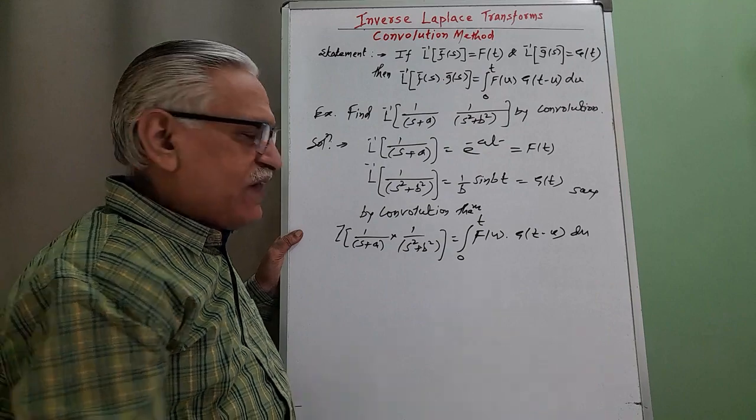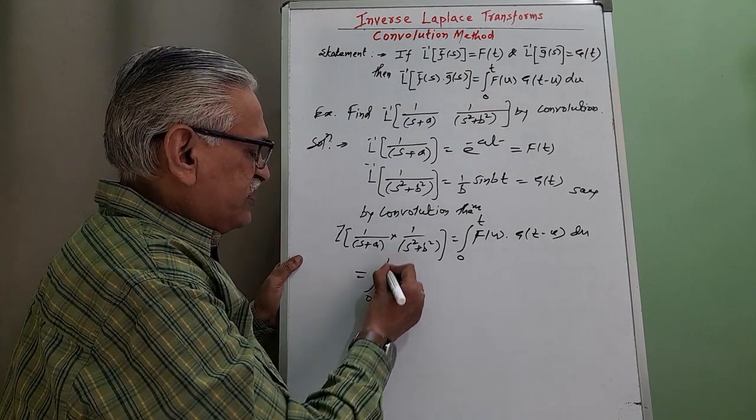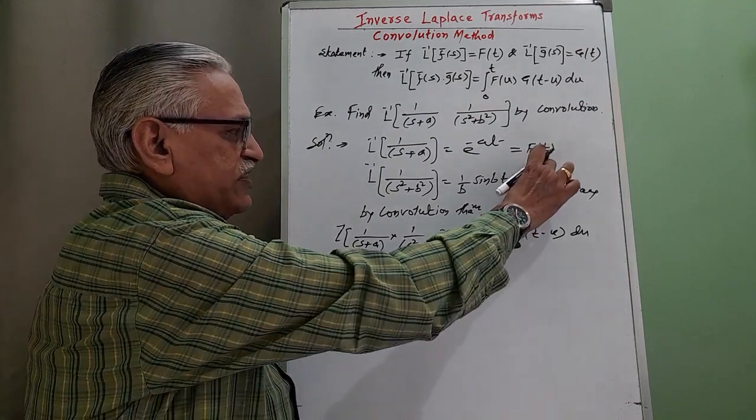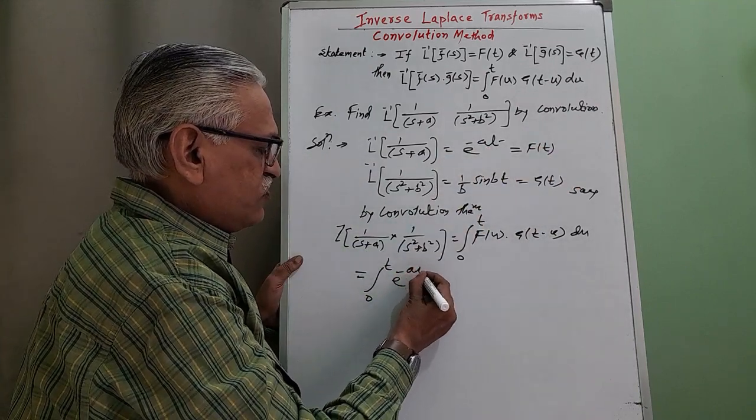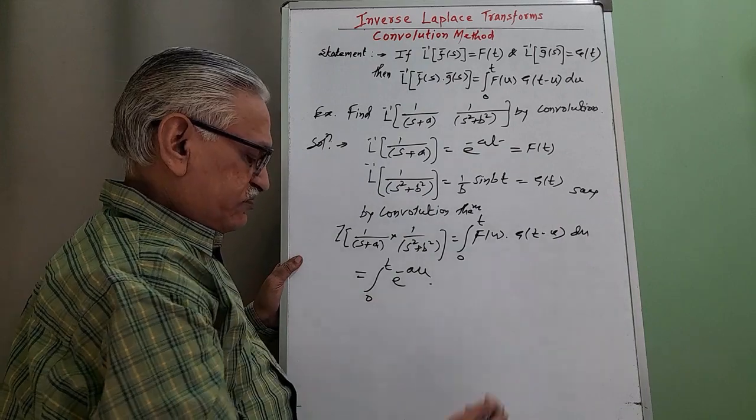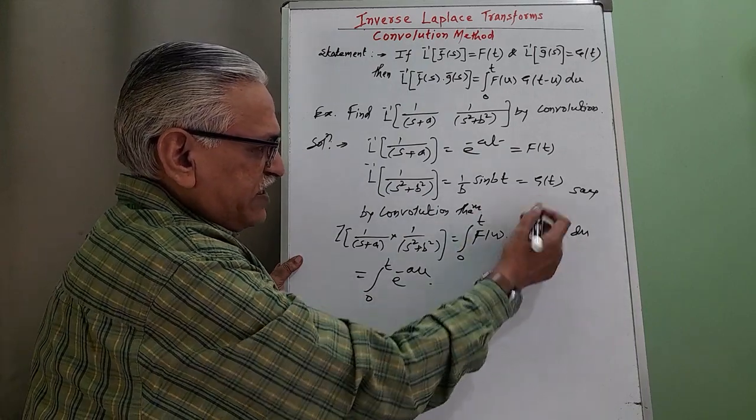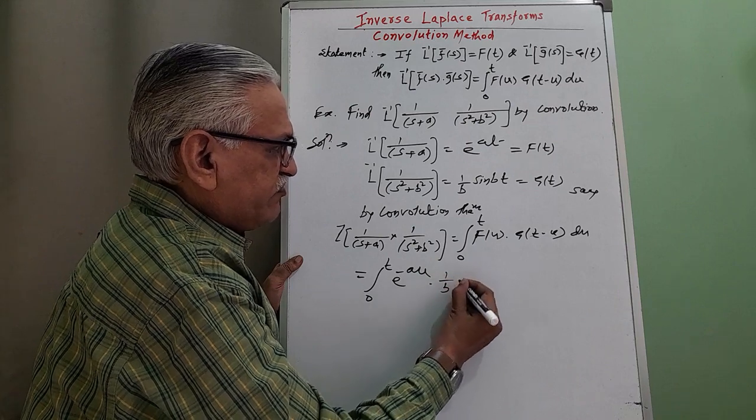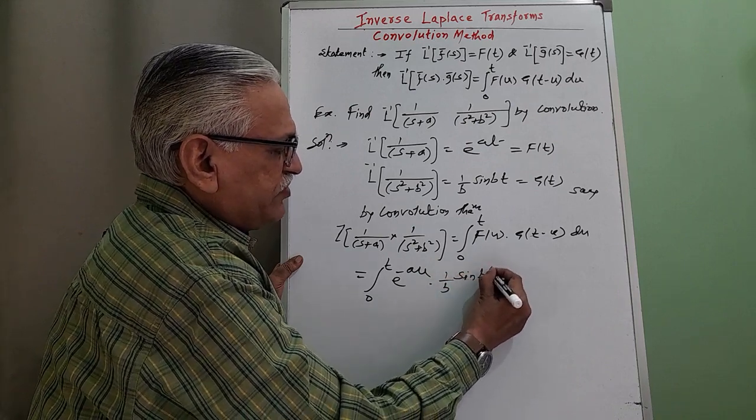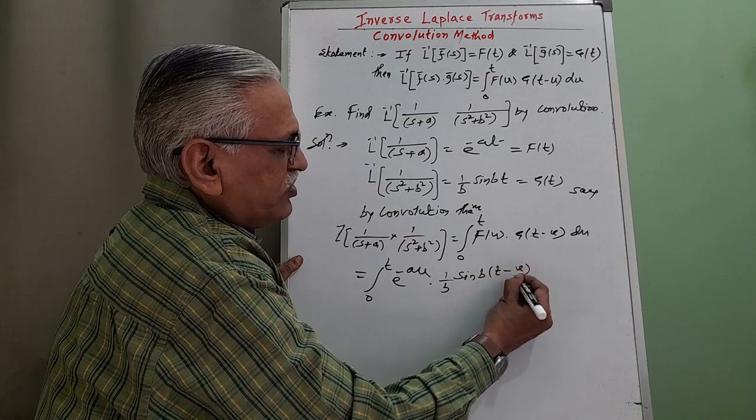And then substituting the values, we get integration from 0 to t, f of u replace t by u here, we get e raised to minus au into g of t minus u replacing t by t minus u, we get 1 by b sin of b times t minus u du.